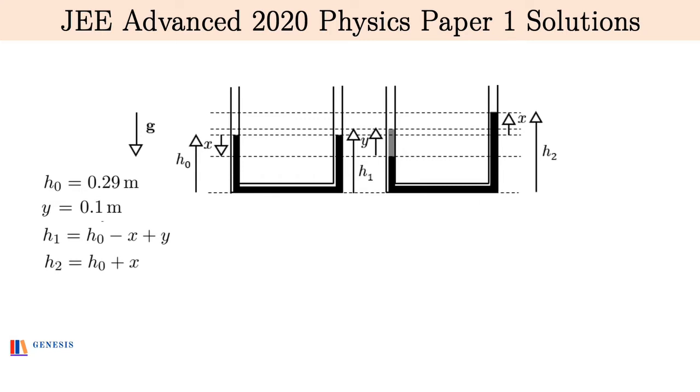Equating the pressures at the base of each arm, we get from the left side P0, where P0 is atmospheric pressure. P0 plus, as we move down, we first encounter the kerosene layer, so we get ρk g y, where ρk is the density of kerosene. Now we encounter the water layer. The water layer has a length of h0 minus x, so the contribution to pressure will be ρw g times h0 minus x.